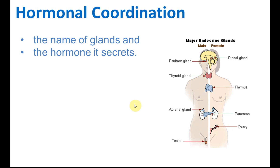For hormonal coordination, there are a few things you need to know. First, you need to know the names of the glands - for example, pituitary glands, thyroid glands, adrenal glands, pancreas, ovary for girls and women, and testis for boys and men. You need to know where each gland is because in an exam they may give you a picture and ask you to label the glands. Second, you need to know the hormones secreted by each gland, such as what hormone is secreted by the thyroid gland.